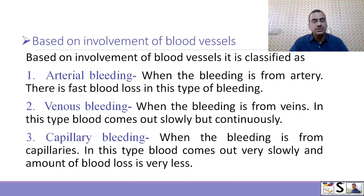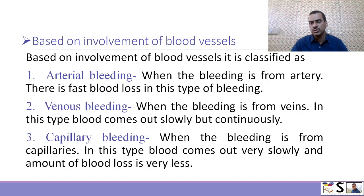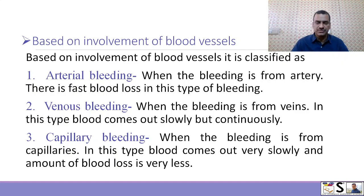The second classification is based on involvement of blood vessel: arterial bleeding, venous bleeding, and capillary bleeding. In arterial bleeding, there is fast blood loss. In venous bleeding, blood comes out slowly but continuously. In capillary bleeding, blood comes out very slowly — oozing drop by drop — the amount of blood loss is very less and it stops very easily.